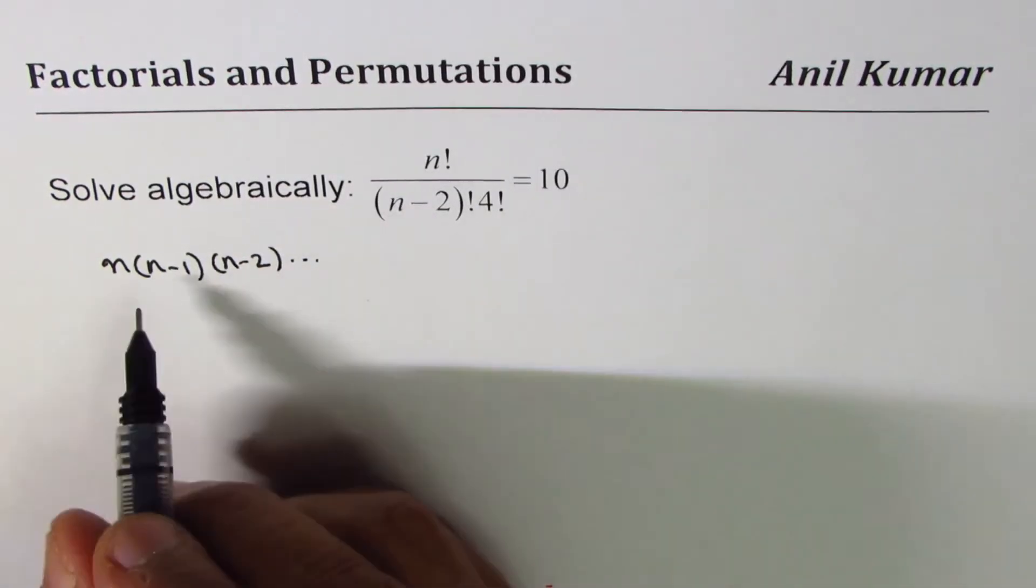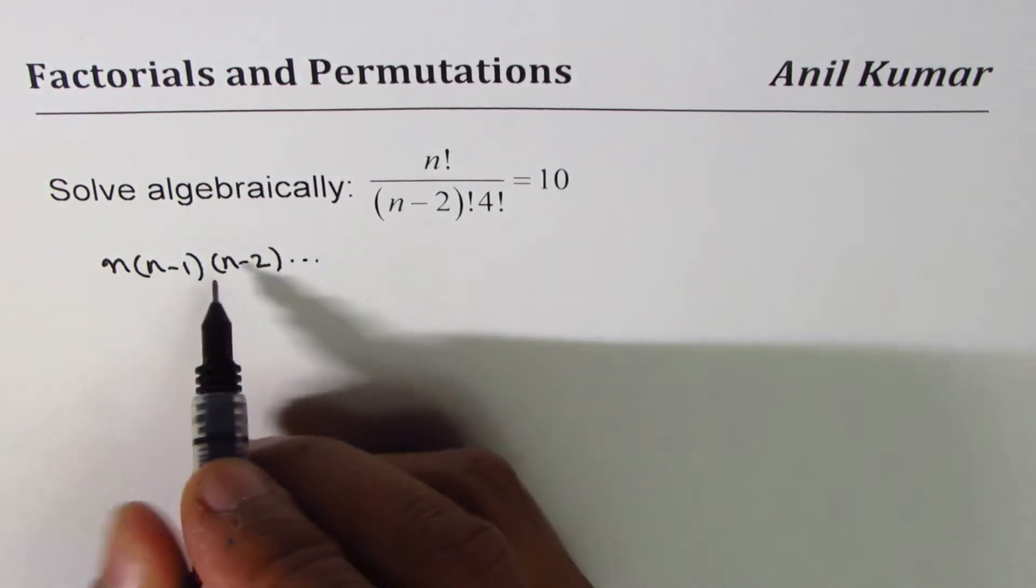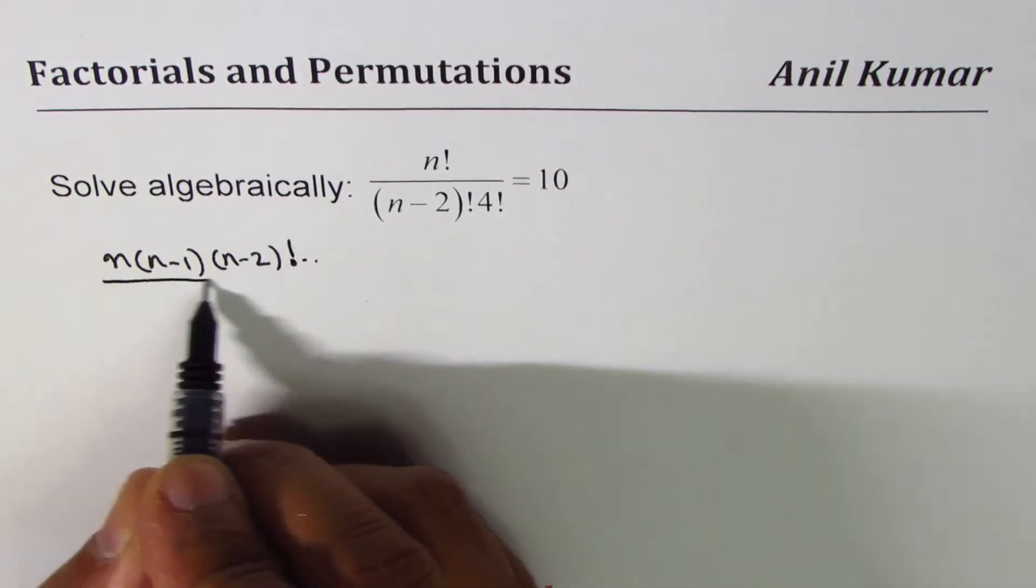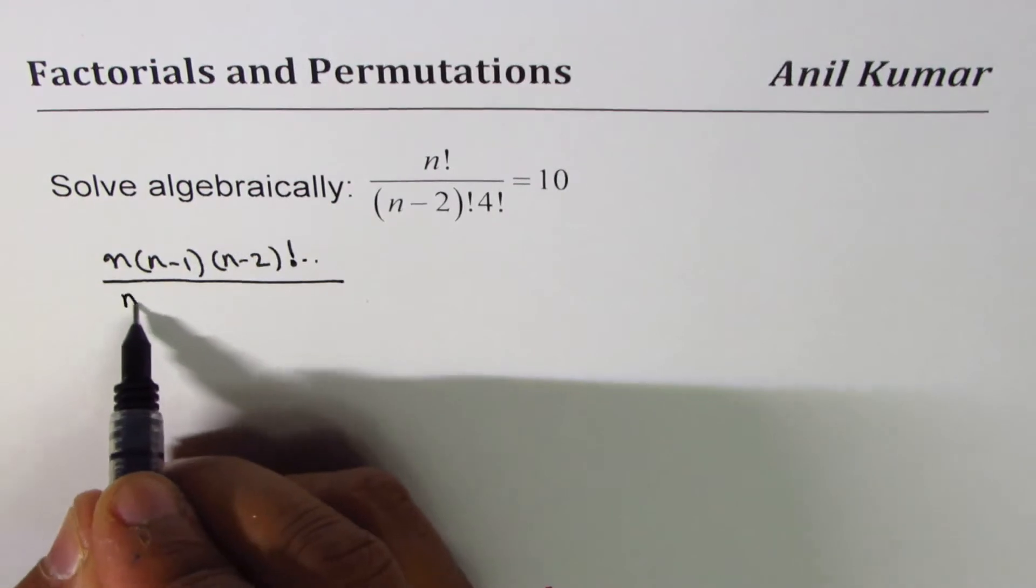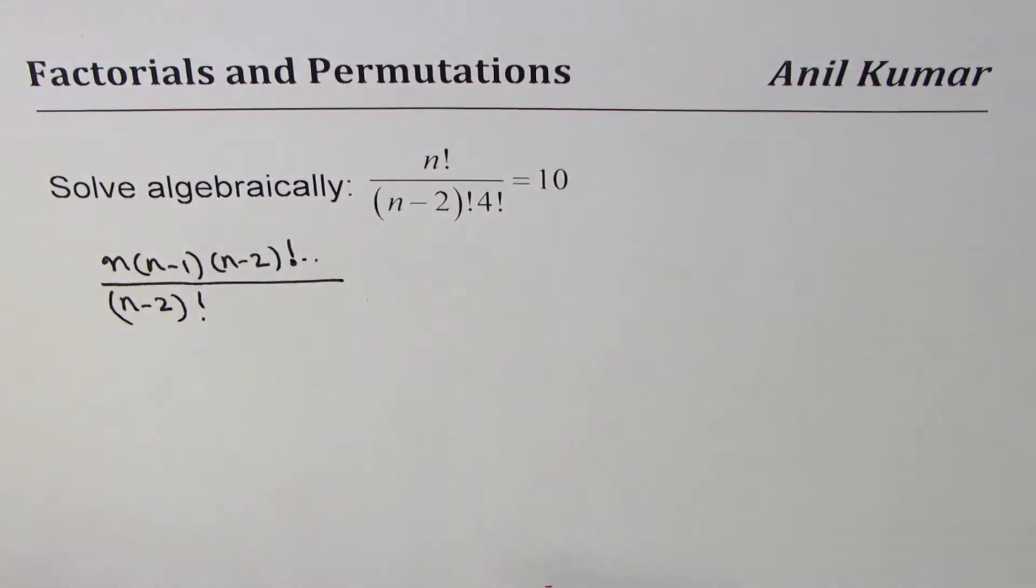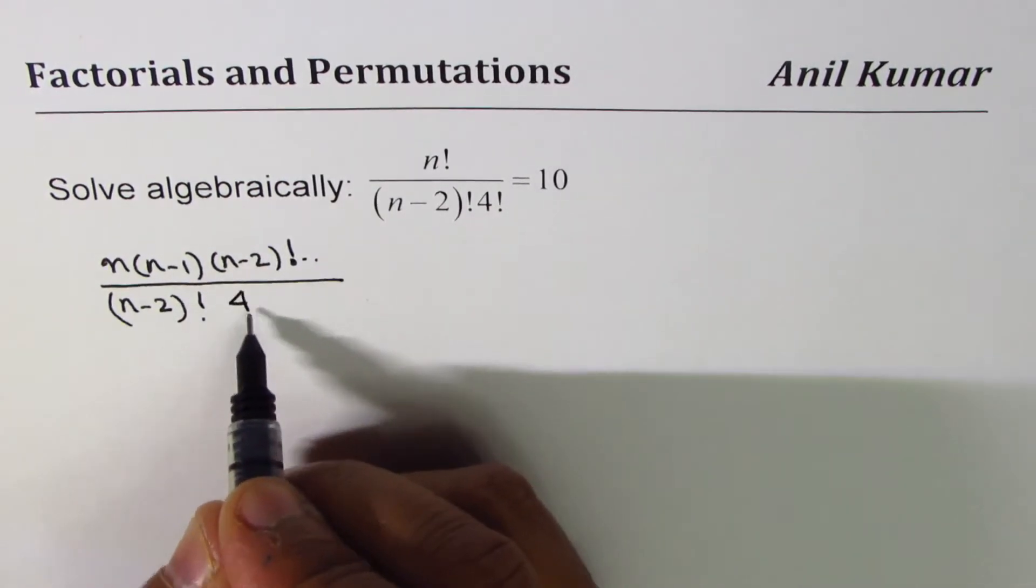You understand? Divided by we have (n minus 2) factorial. Now they can be cancelled - that's the whole idea, right? 4 factorial means 4 times 3 times 2 times 1, and then we have 10 here.